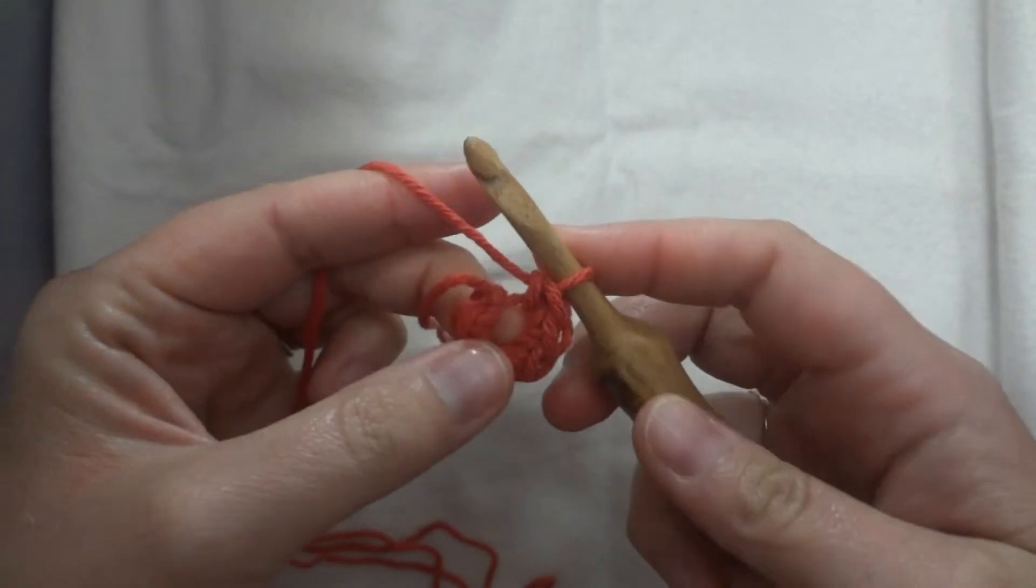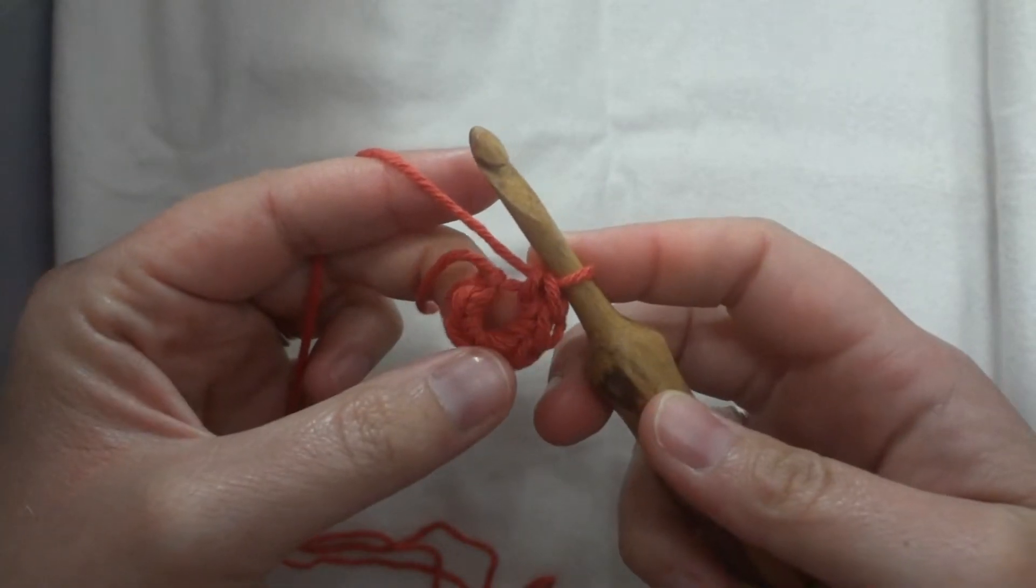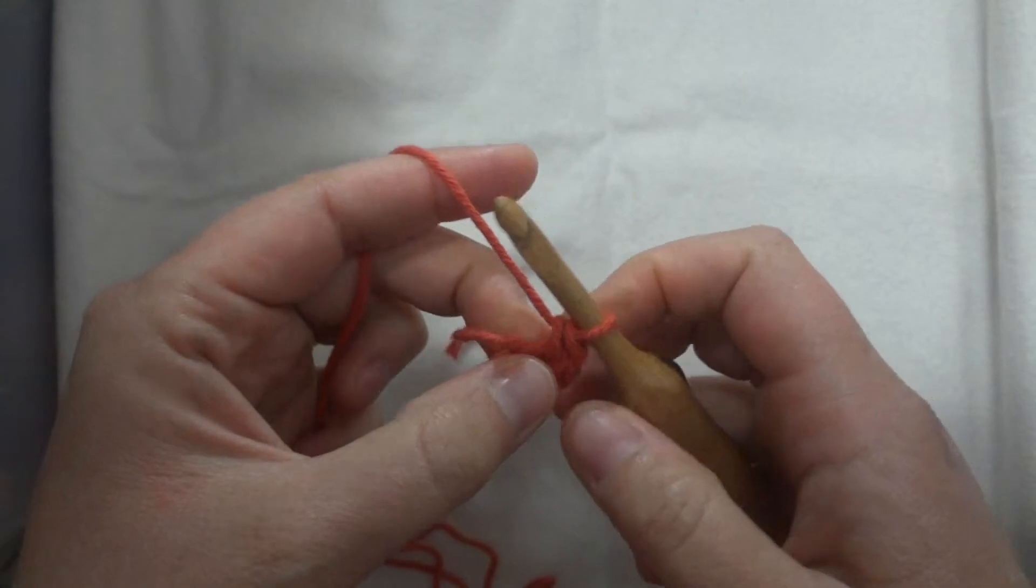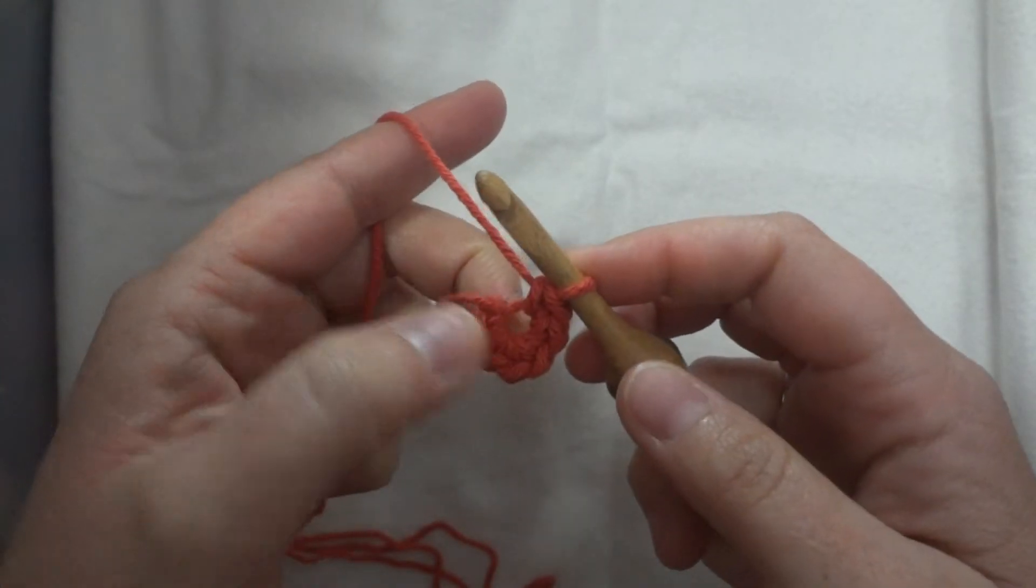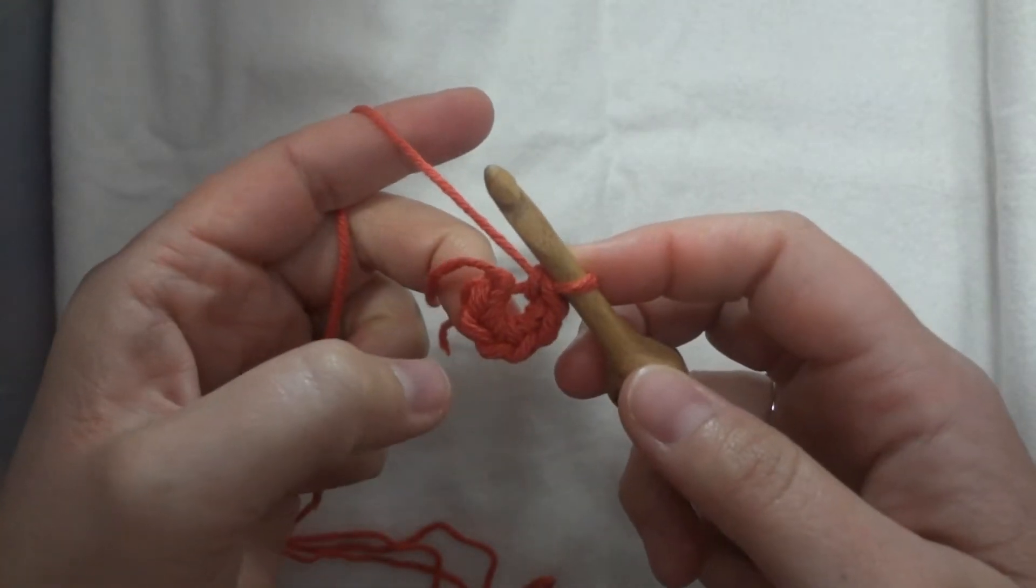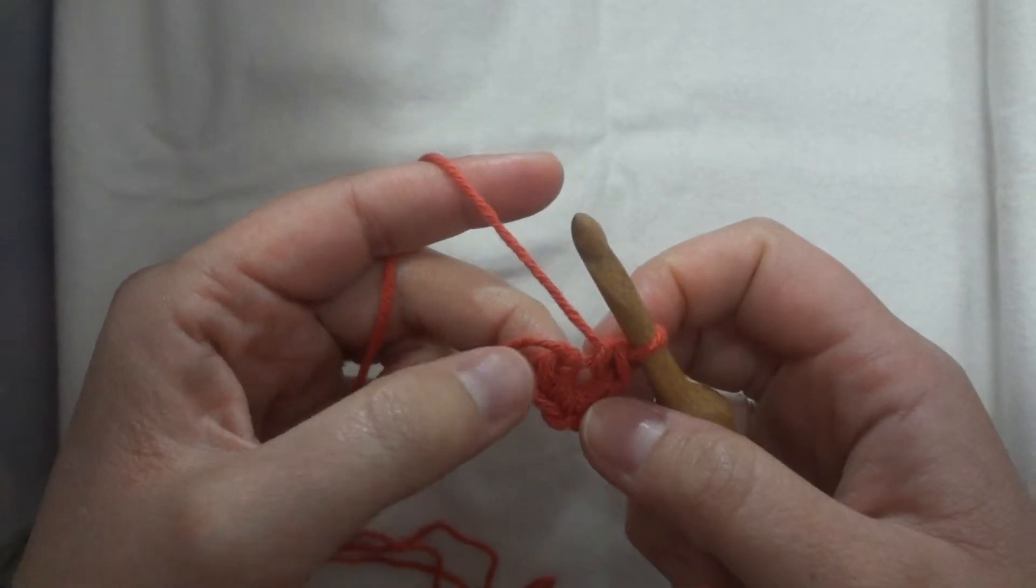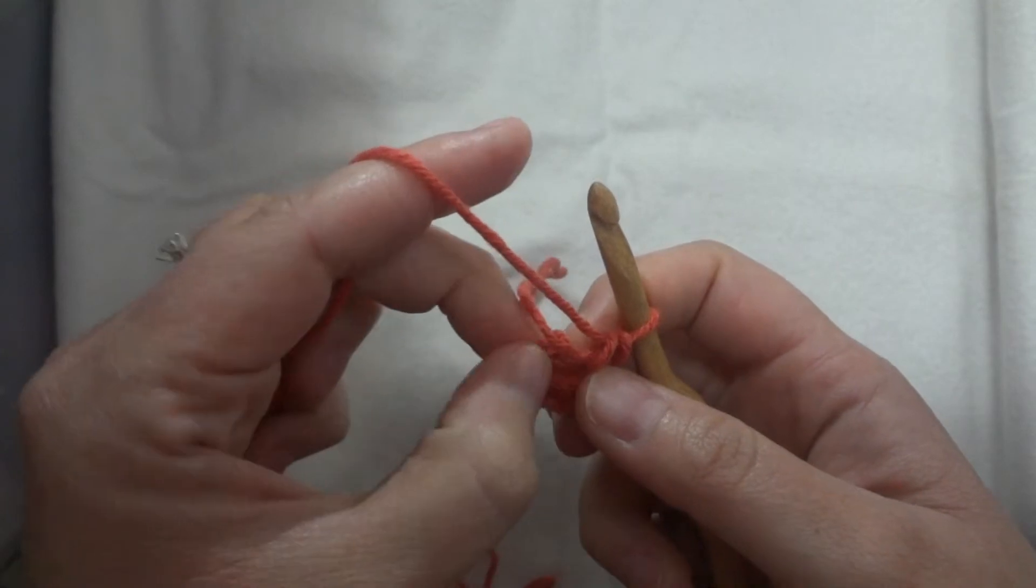All right, so now I have six single crochet in there. Now let's say that this time I'm going to work in a spiral, so I won't join. One, two, three, four, five, six. My first single crochet is right here.